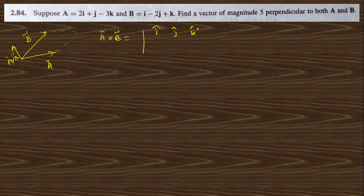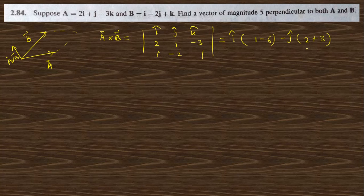The coefficients of a are (2, 1, −3) and of b are (1, −2, 1). Expanding the determinant: i cap(1·1 − (−3)·(−2)) − j cap(2·1 − (−3)·1) + k cap(2·(−2) − 1·1). This gives i cap(1 − 6) − j cap(2 + 3) + k cap(−4 − 1) = −5i cap − 5j cap − 5k cap.